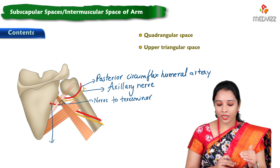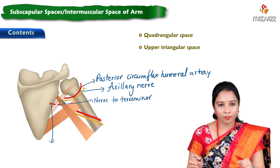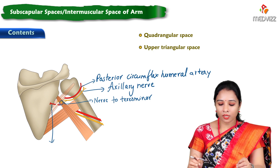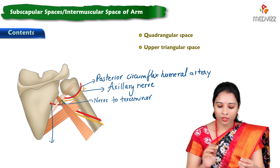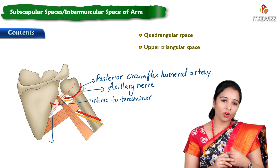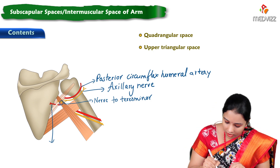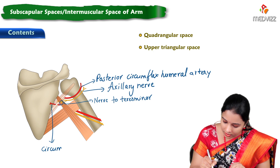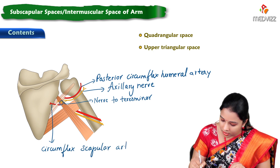The upper triangular space contains a blood vessel which winds around the scapula. Since it winds around, it is called the circumflex scapular artery.